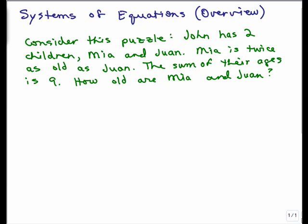Let's consider this little brain teaser puzzle which will help you understand what it means to have a system of equations. John has two children, Mia and Juan. Mia is twice as old as Juan. The sum of their ages is 9. How old are Mia and Juan?